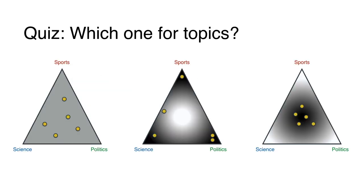Now I have a quiz. Let's say the corners of our Dirichlet distribution are the topics — sports, science, and politics — and the yellow dots are articles. Which Dirichlet distribution represents articles with respect to topics? Feel free to pause and think about it. The answer is the middle one — the one where points cluster near corners. Because if you take an article, it's much more likely to be about one topic: sports, science, or politics. It's not very likely to be all three equally. Maybe two, but with less probability.